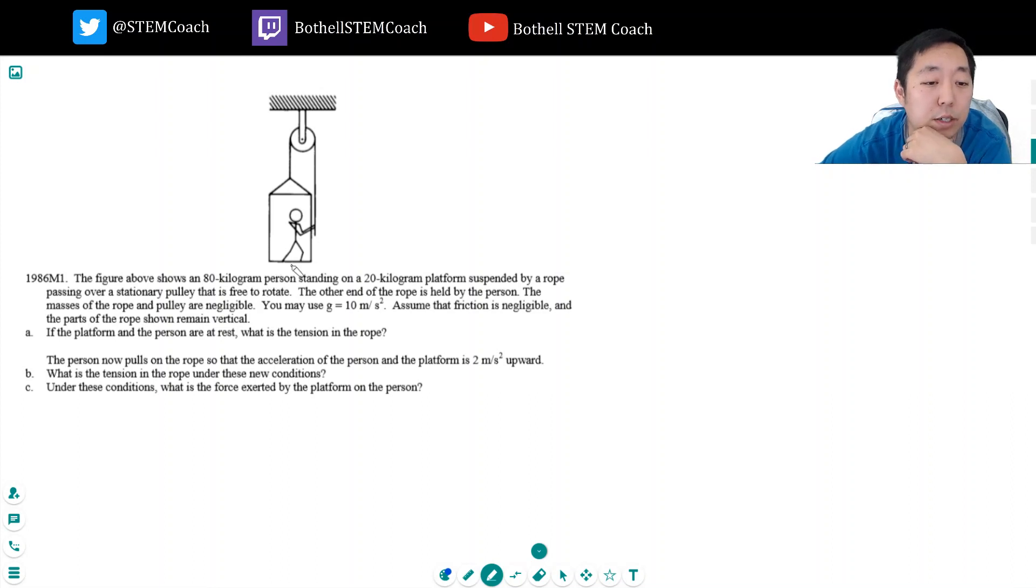The figure above shows an 80 kilogram person standing on a 20 kilogram platform suspended by a rope passing over a stationary pulley that's free to rotate. The other end of the rope is held by the person. The masses of the rope and pulley are negligible. You may use g equals 10 meters per second squared.